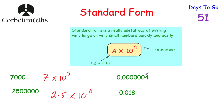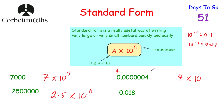Now let's look at writing small numbers in standard form. If we had 0.0000000004, we need a number between 1 and 10, so we use 4, then multiply by 10 to a certain power. For very small numbers like 0.000... it's going to have a negative power, because 10⁻¹ = 0.1, 10⁻² = 0.01, and so on. We count how many columns we need to move the 4: 1, 2, 3, 4, 5, 6, 7 columns — so it's 4 × 10⁻⁷.